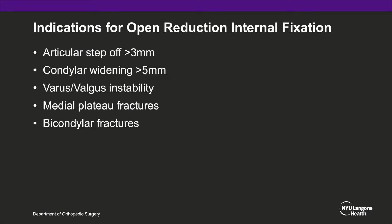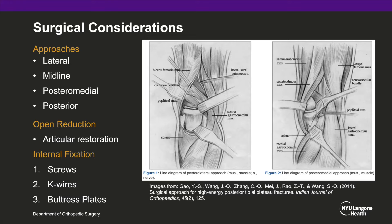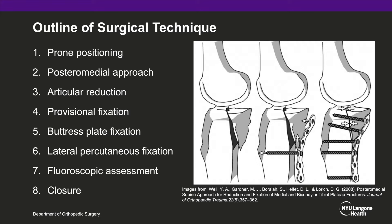With regards to surgical considerations, there are multiple approaches available including the lateral, midline, posterior, medial, and posteromedial approach. The goal of open reduction is to restore the articular surface; internal fixation can be achieved with screws, K-wires, and buttress plates. For our surgical technique, the patient will be positioned prone and the fracture will be accessed through a posterior medial approach. The articular surface will be reduced and provisionally fixed, plates applied in buttress fashion posteriorly, and fixation reinforced with percutaneous screws laterally. Final fixation will be confirmed under fluoroscopy and the wound will be closed.